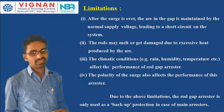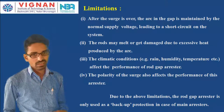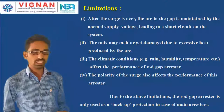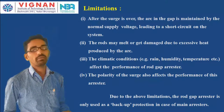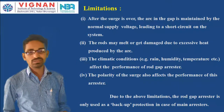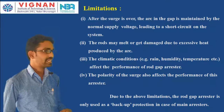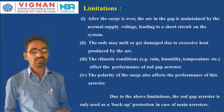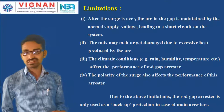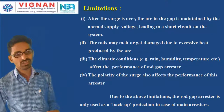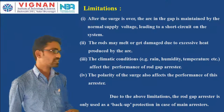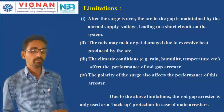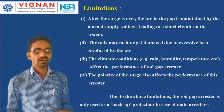Due to these four limitations, the rod gap arrestor is only used as backup protection in case of main arrestors. If the main arrestors fail, the rod gap arrestors come into action and send the lightning currents to the ground.